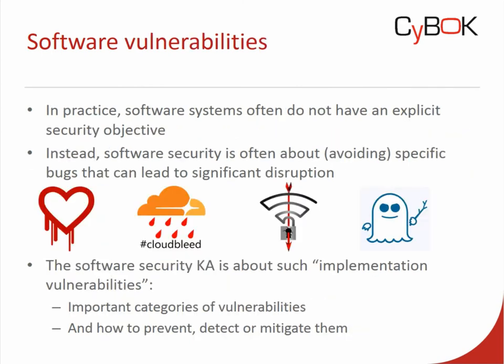Now in software security, in practice, the security objective is often not very explicit. For many software systems, we don't even have precise functionality specifications, let alone precise security objectives. We may have vague objectives like wanting to keep customer data confidential, but not sufficiently precise security objectives to rigorously study the system. So in practice, software security is very often about avoiding specific bugs — specific classes of bugs that can lead to significant disruption of the software, such significant disruption that it will likely break any security objective you might have, even if that objective is implicit.